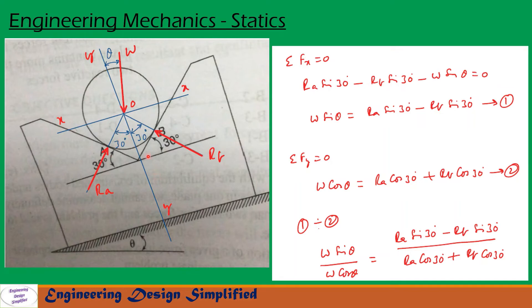Now, let us resolve forces along XX. Along XX, we have sigma FX equal to 0. The component of Ra along XX will be Ra sin 30, that is written here. The component of Rb along XX will be Rb sin 30. Since both are opposite, Ra sin 30 we have taken positive. Now, Rb sin 30 we need to take negative. So, Ra sin 30 minus Rb sin 30.